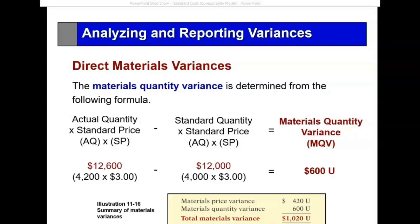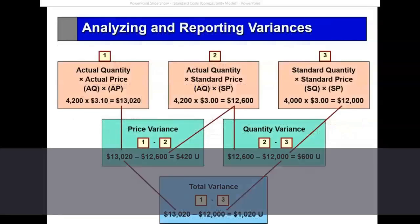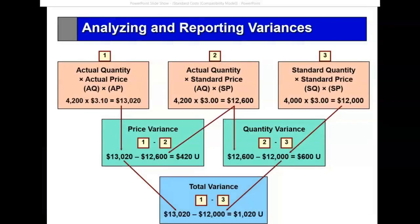$600 as a percentage of $12,000 — 10% would be $1,200, so $600 is about 5% variance, meaning it would be worth looking into why we used more material than we should have. Another way of analyzing is this technique: we set up Box 1 as actual quantity times the actual price, and Box 3 as the standard quantity times the standard price.